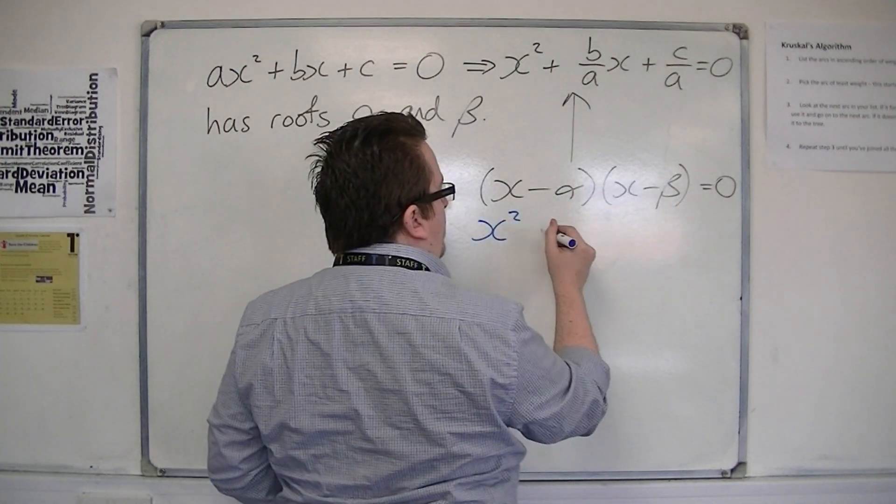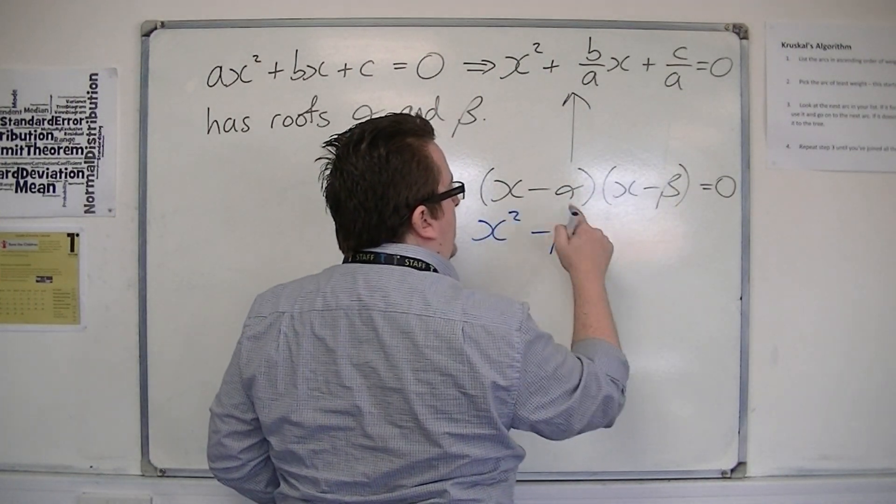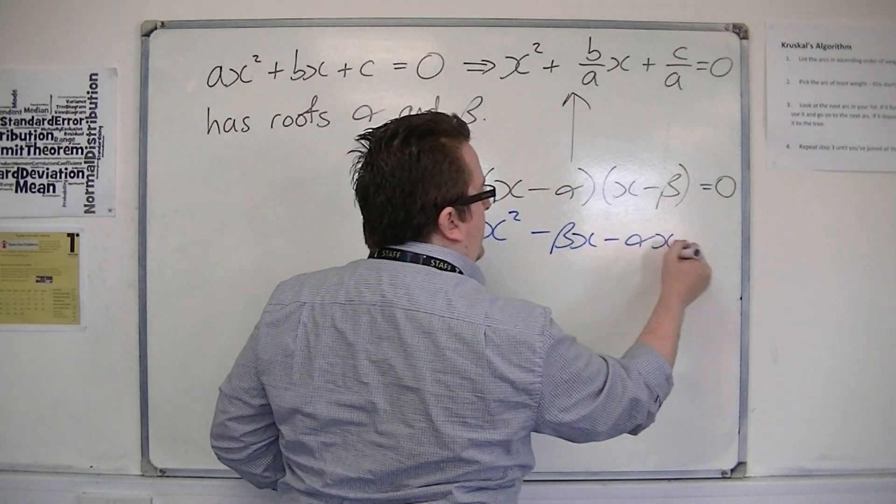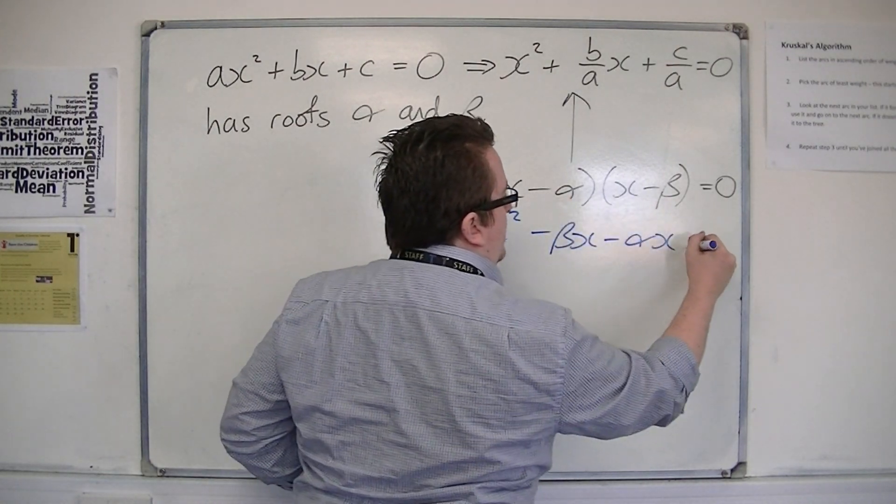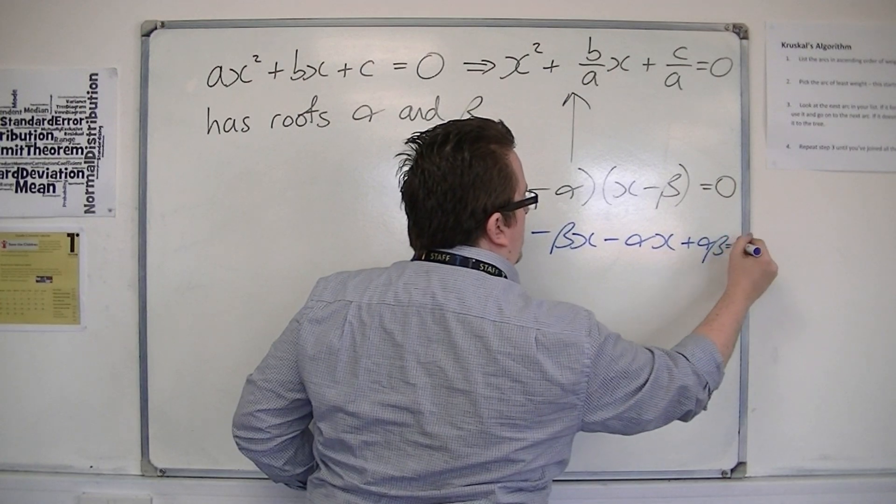x times -β, so -βx, -α times x, so -αx, and -α times -β, so that's αβ, which is going to be equal to 0.